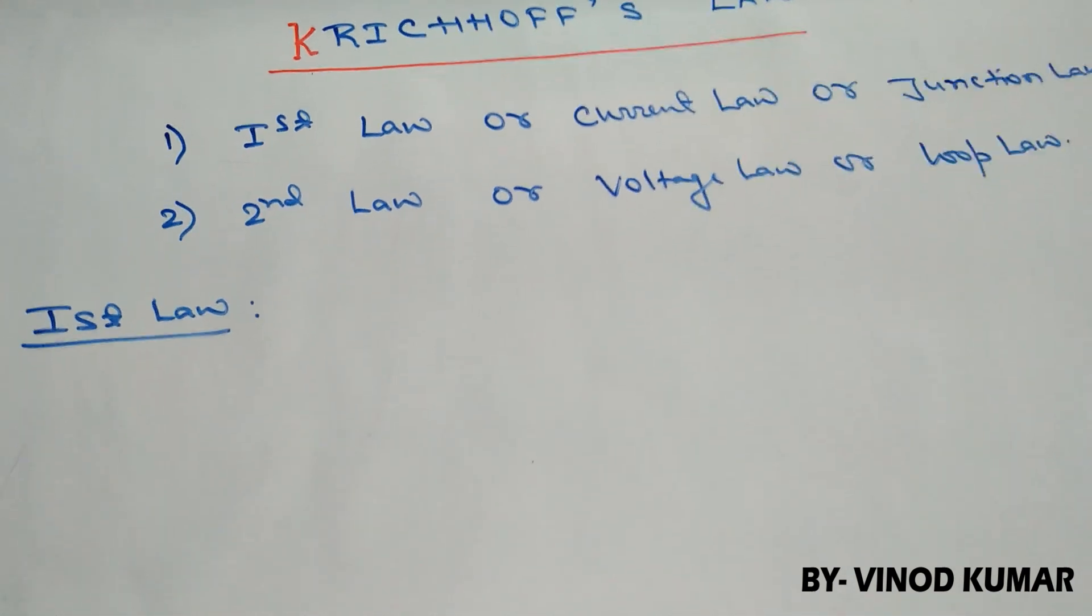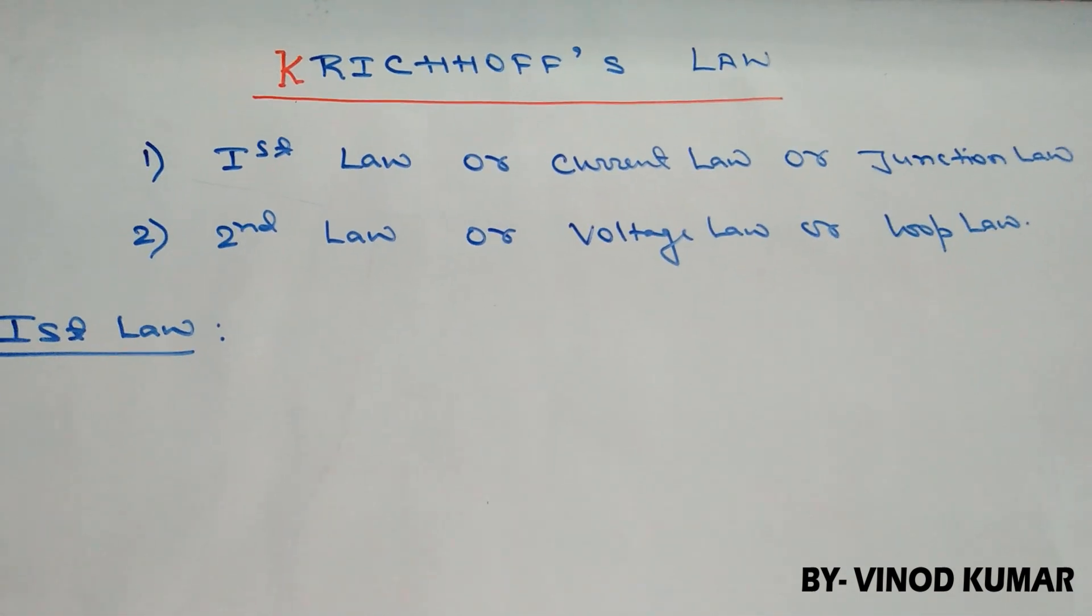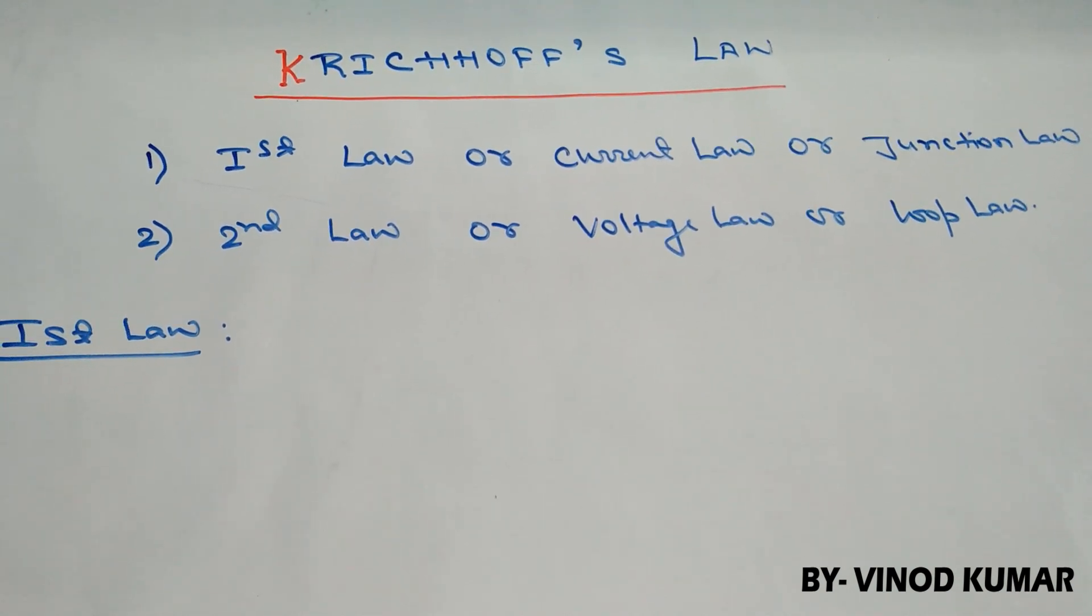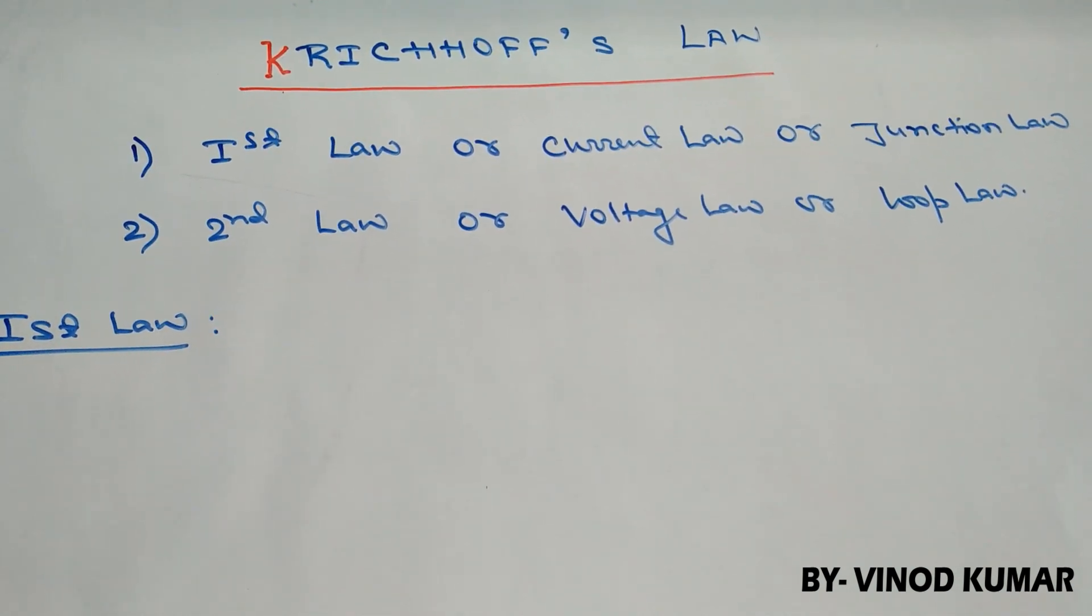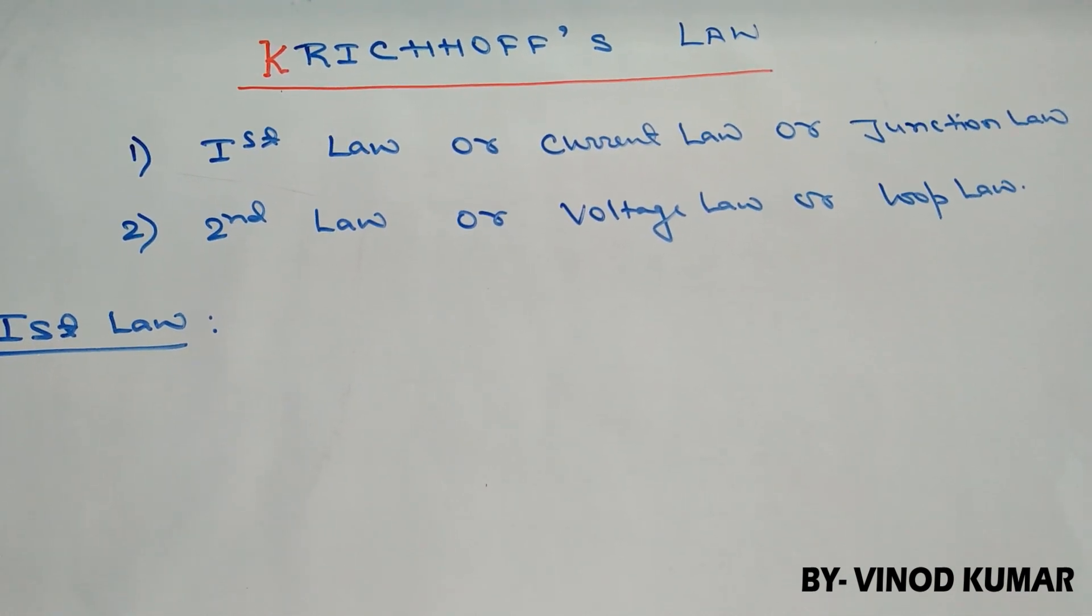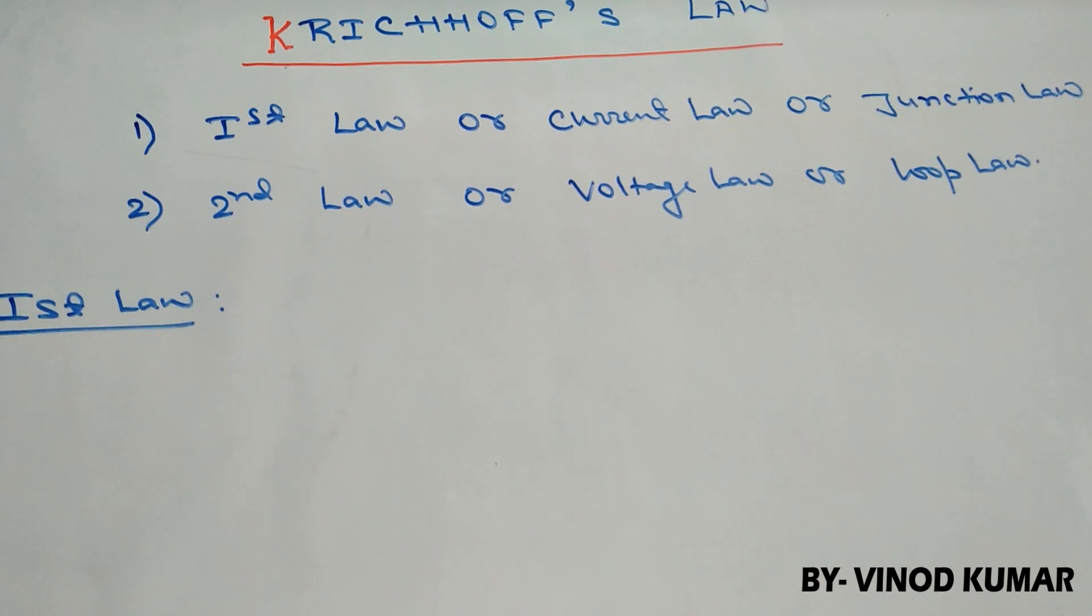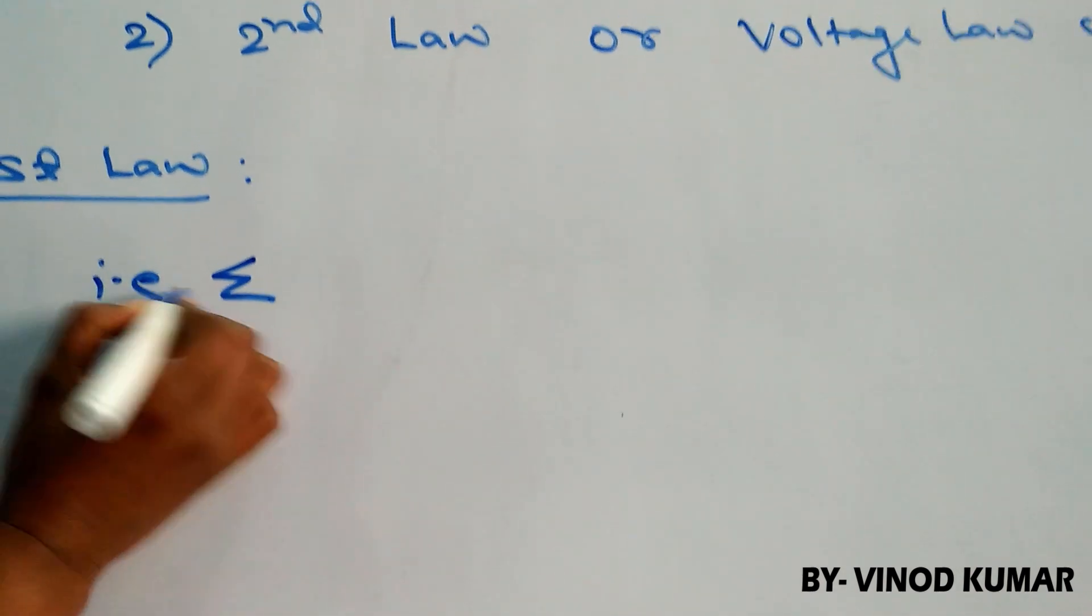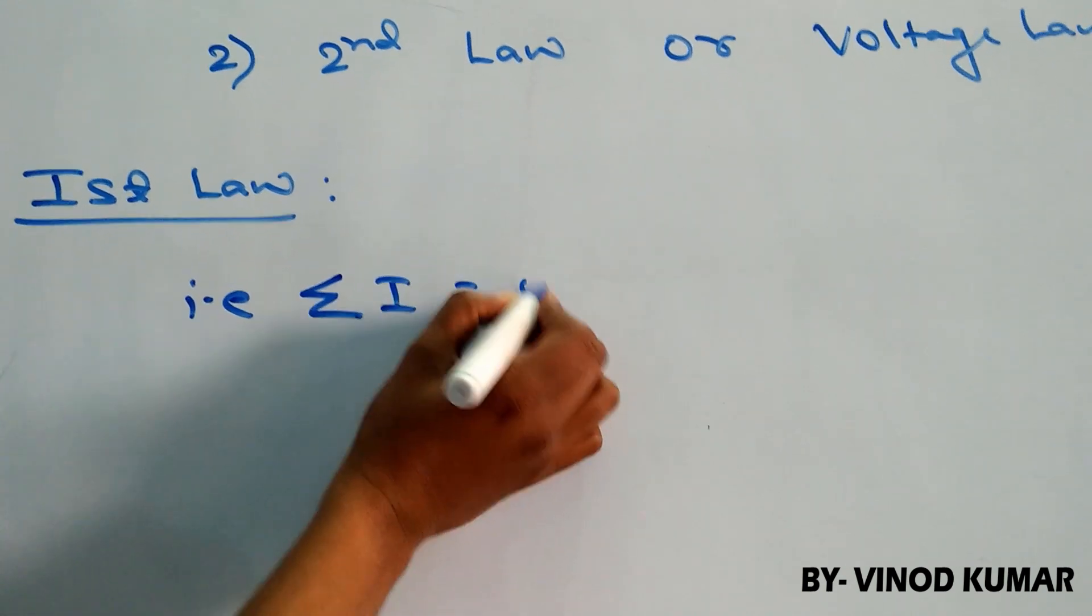According to junction law, the algebraic sum of all the currents meeting at a junction in a closed electrical circuit is zero. That is summation I equals to zero.